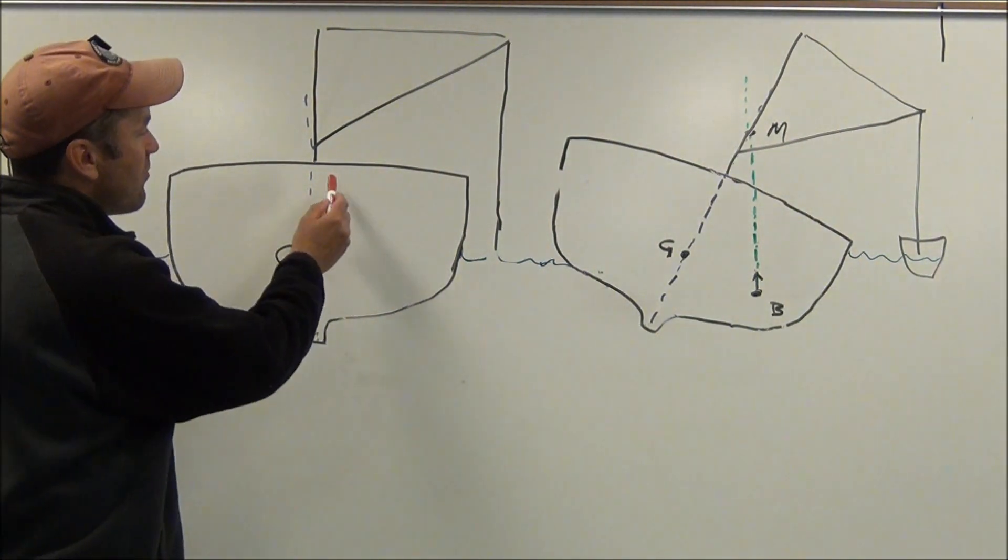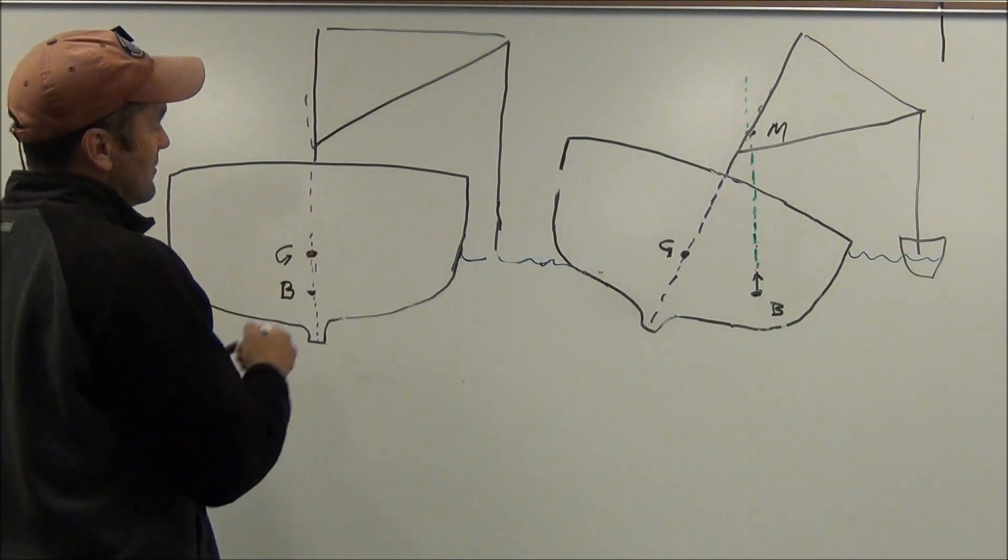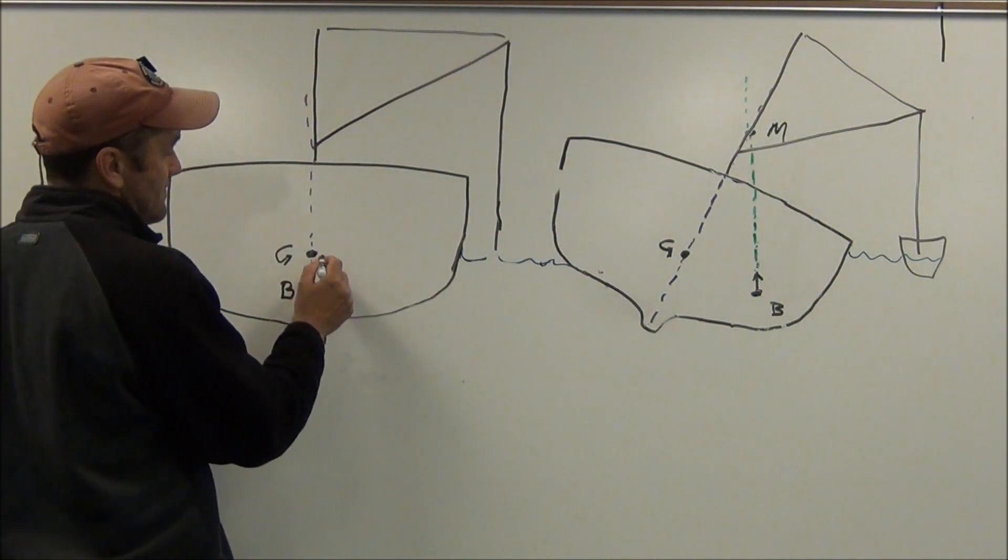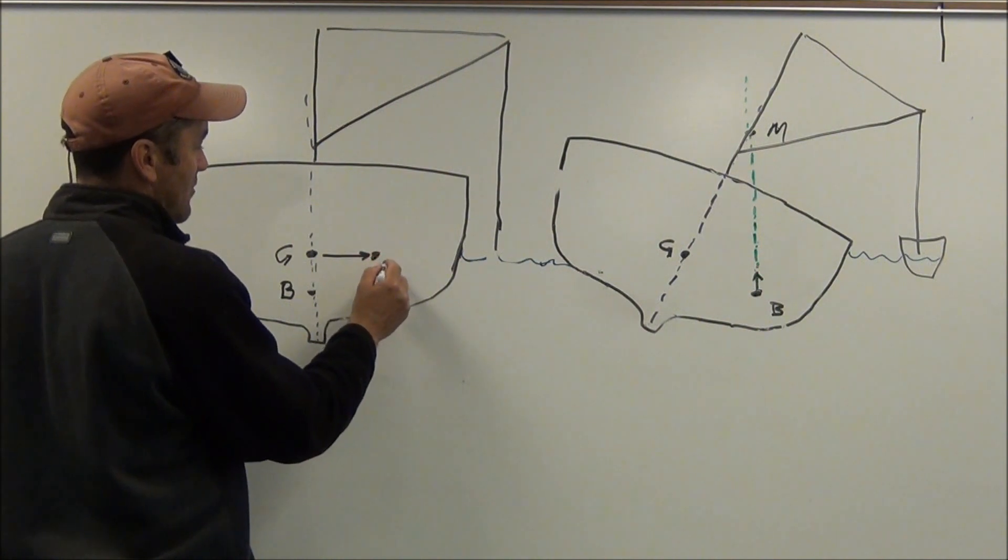If you move any weight on the vessel, or a significant amount of weight on a vessel horizontally, either at port or starboard, then you can change the location of the center of gravity horizontally.